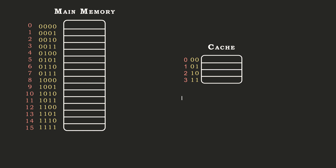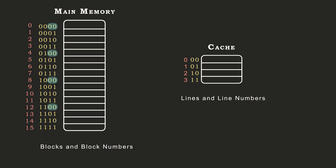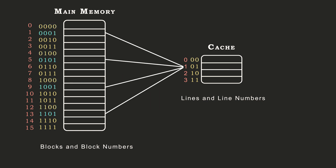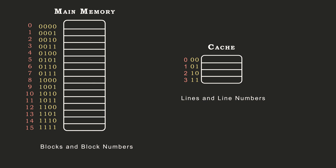In cache terms, cache partitions are called lines with line numbers; main memory partitions are called blocks with block numbers. Line numbers act as labels. The mapping logic is: the block number's least significant bits are mapped to the line number. So line 0 can hold blocks 0, 4, 8, and 12; line 1 can hold blocks 1, 5, 9, and 13; and so on.